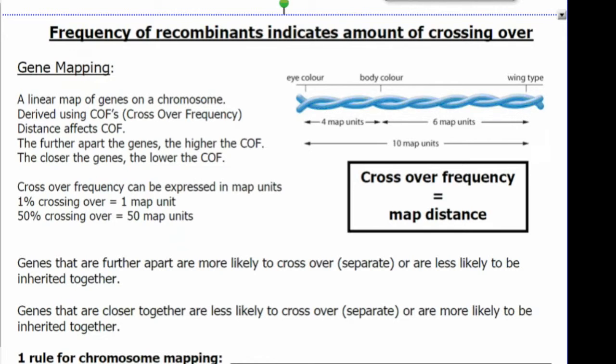In gene mapping we use crossover frequencies to determine the distance between genes. A linear map of genes on a chromosome means that we write it as a straight line.